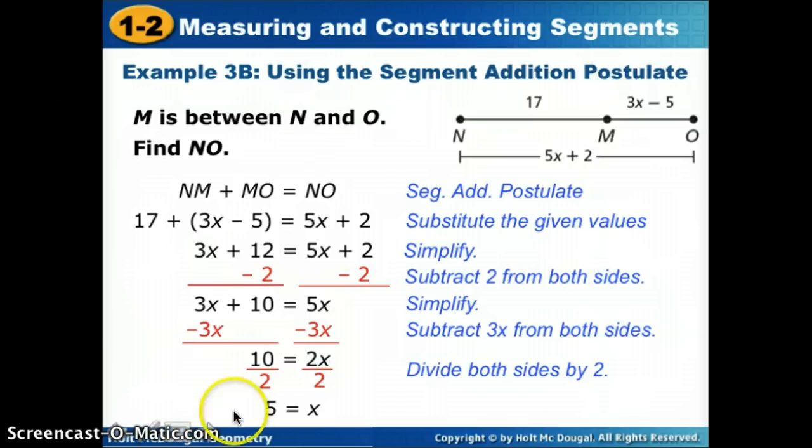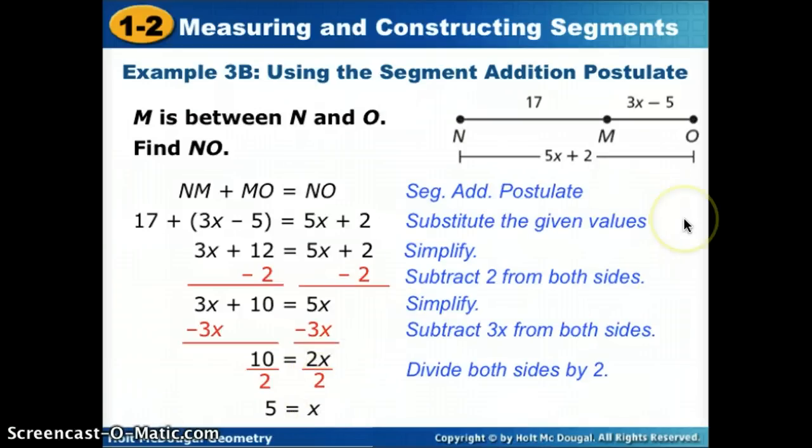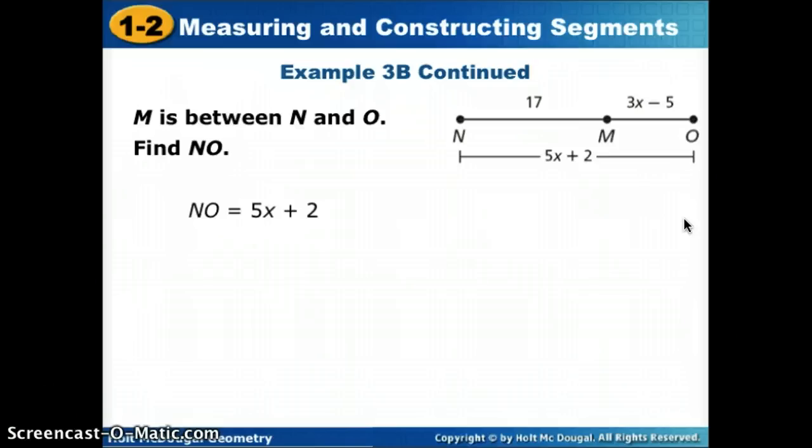Now remember, our question asked for what is NO. Previously, we saw that NO was 5X plus 2. X was that missing piece, so we can take X's value and plug it in for NO's measure. If NO is 5X plus 2 and X equals 5, substitute 5 in for X and then simplify. 5 times 5 is 25, plus 2 gives us NO's length to be 27.